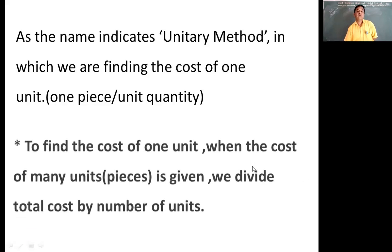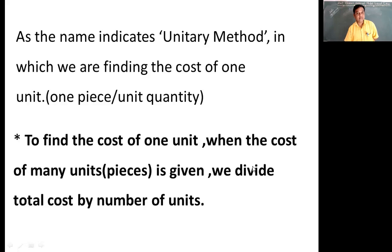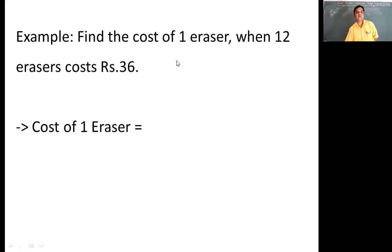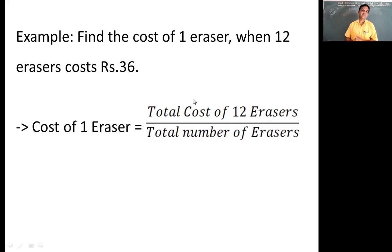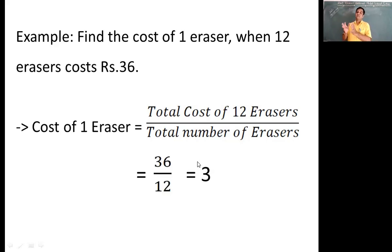To find the cost of one item when the cost of many items is given, we are going to divide the given amount by the number of pieces, and we will get the cost of one item. For example, find the cost of one eraser if the cost of 12 erasers is given as 36 rupees. So to find the cost of one eraser we divide the total cost by the quantity: 36 divided by 12. So we find the cost of one eraser is 3 rupees.